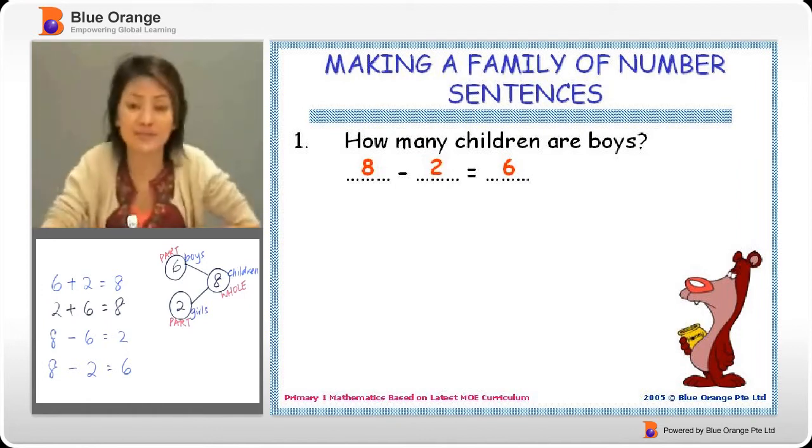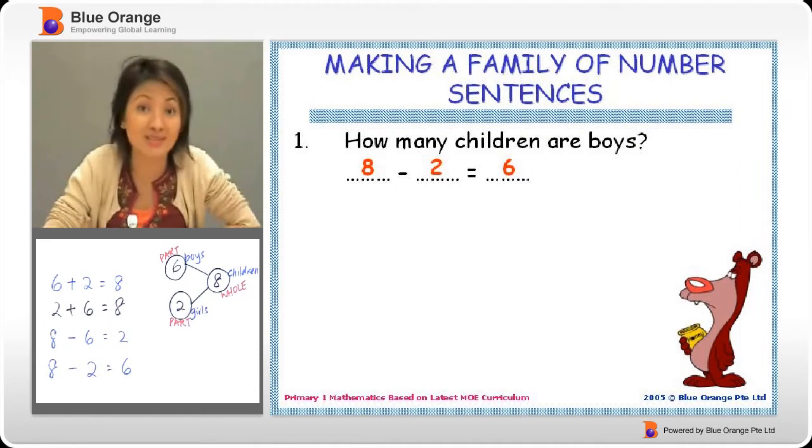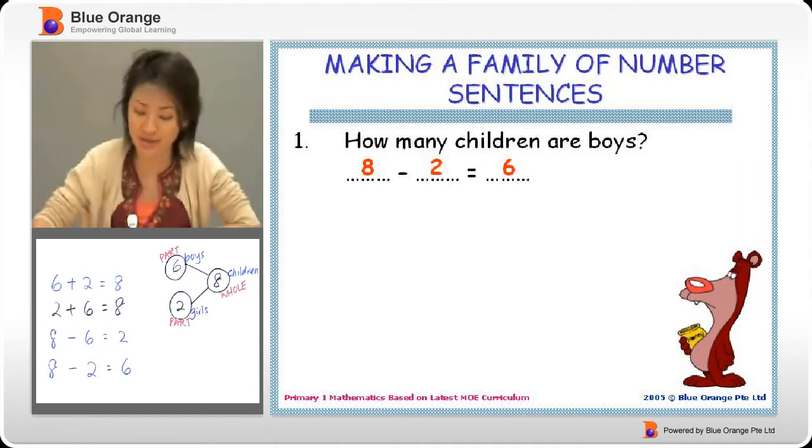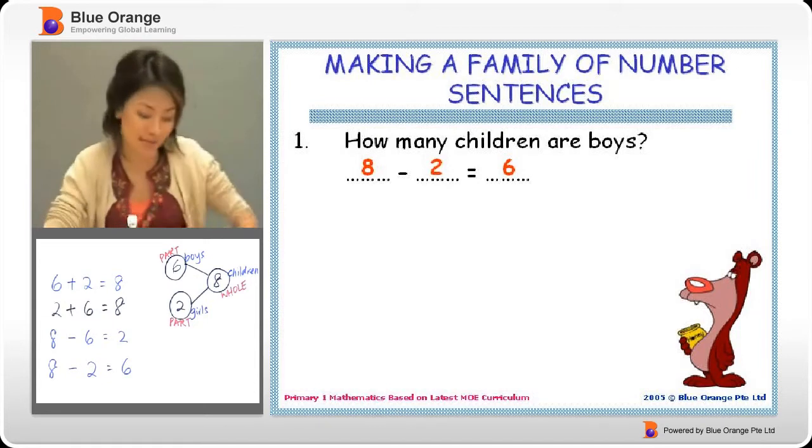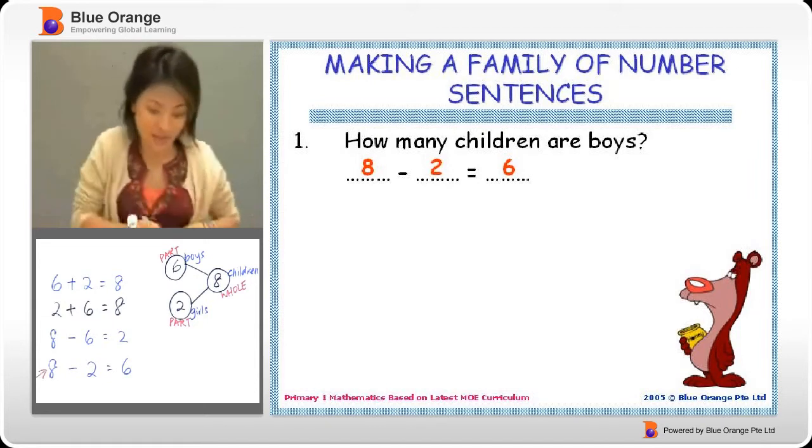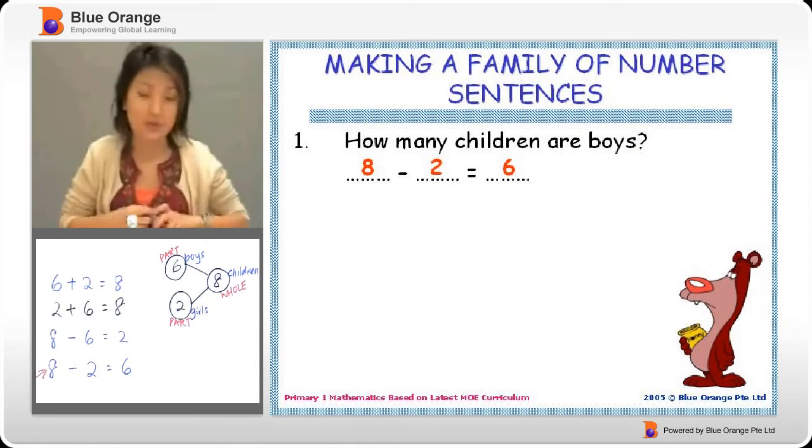How many children are boys? So we take the children minus girls. Children, there are eight. Girls, there are two. So eight minus two gives us six. We have this here. Eight minus two equals six.